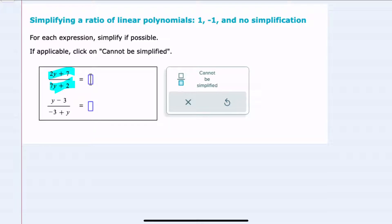But in this case, there is nothing I can factor out of the top or the bottom. And even changing the order, such as writing the top as 7 plus 2y, still doesn't give me anything common in the numerator and denominator that I can cancel. So our top expression cannot be simplified.